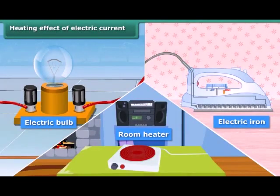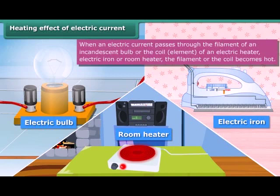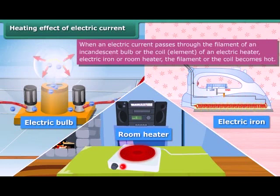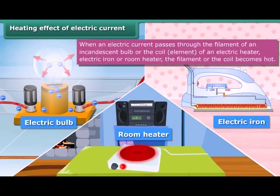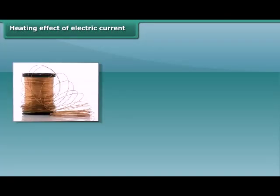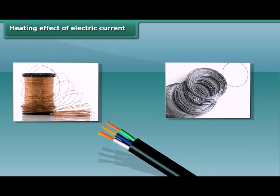Heating effect of electric current: when an electric current is passed through a metallic wire, like the filament of a bulb or coil of an electric heater, geyser, electric iron, or room heater, the coil becomes hot and glowing. This is known as the heating effect of electric current. In this condition, they radiate heat and light. The amount of heat produced in a wire depends on its material, length, and thickness.